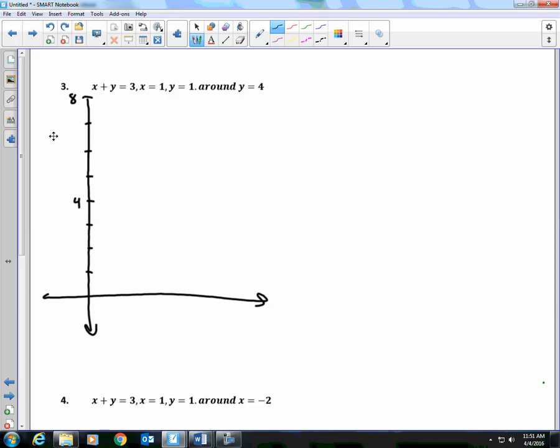Okay, what does the graph of x plus y equals 3 look like? What's the x and y intercept? 3 and 3, right? Yep. So that's my line. What does x equals 1 look like? How about y equals 1? Everybody see my shaded region?